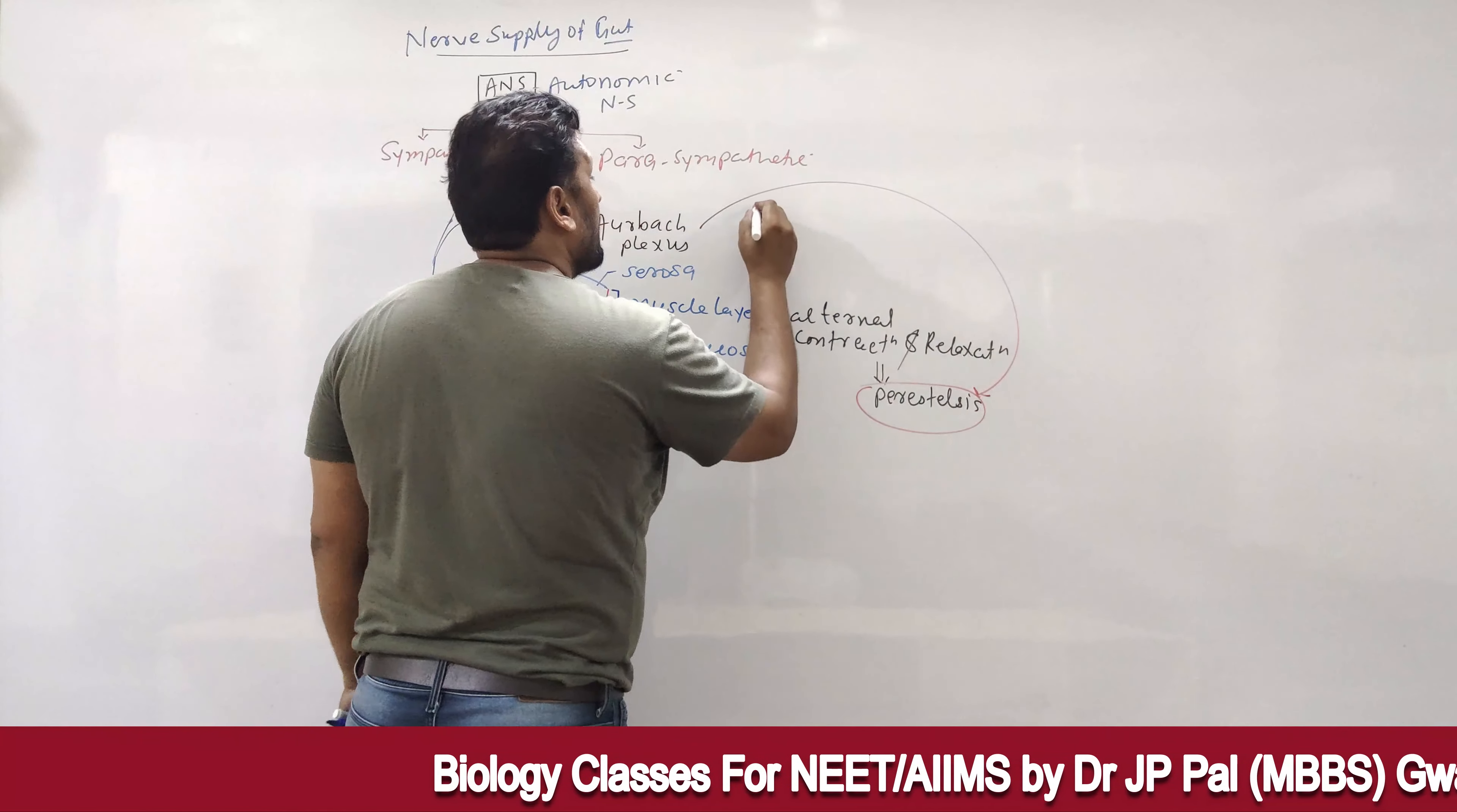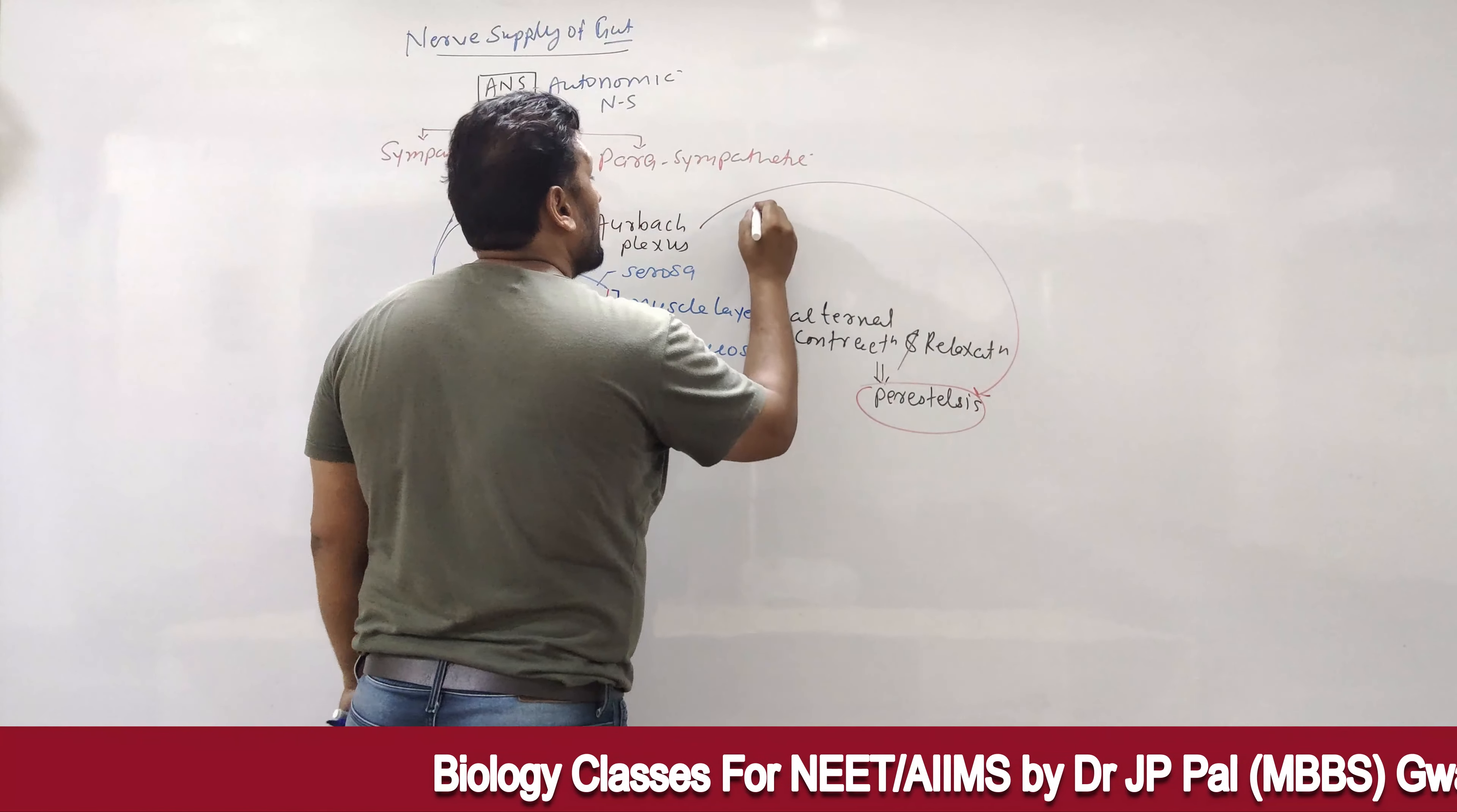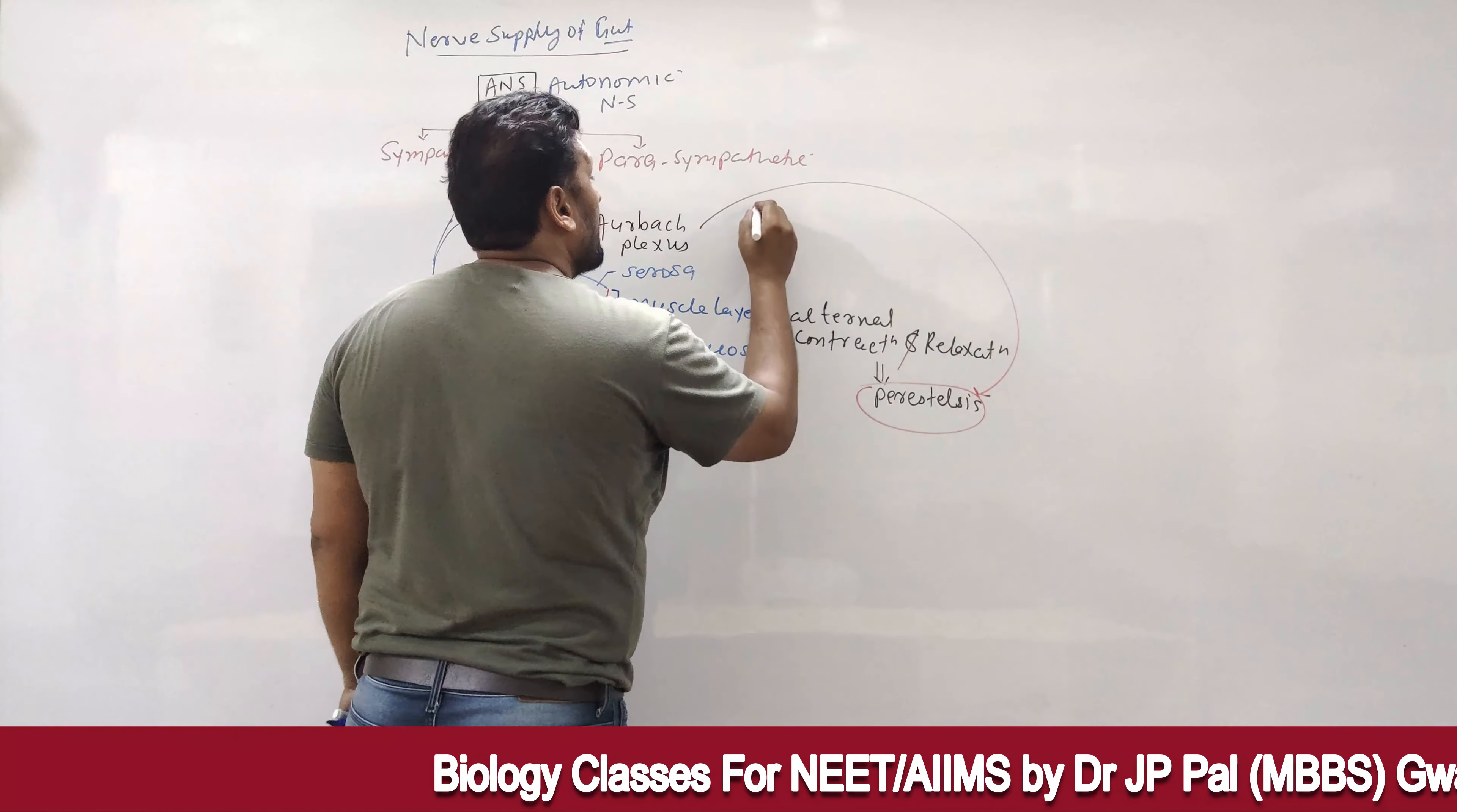This is LML or CML, so LML, CML, this is called myenteric or Auerbach plexus, which controls peristalsis. Peristalsis, this is what our system would be, sympathetic or parasympathetic.